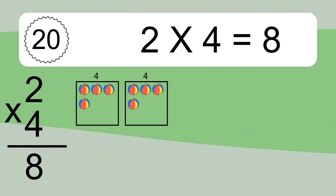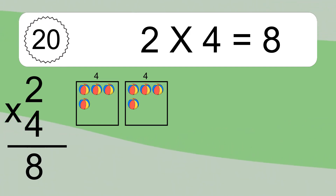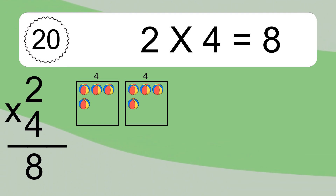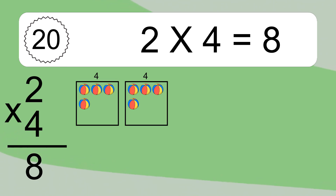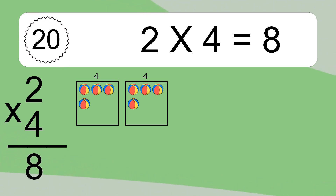We have 2 boxes, and each box has 4 colorful balls inside. If you count all the balls in all the boxes together, you will have 2 times 4 balls. This equals 8 balls.